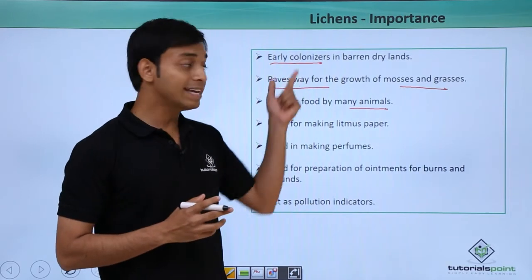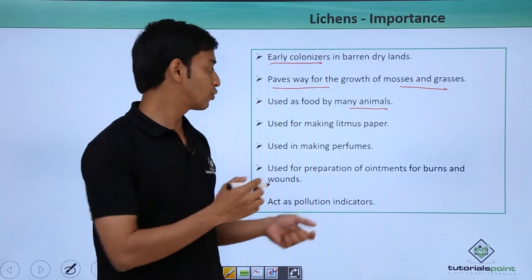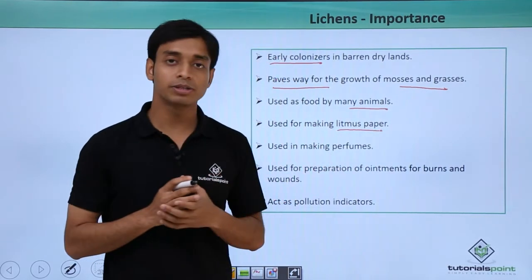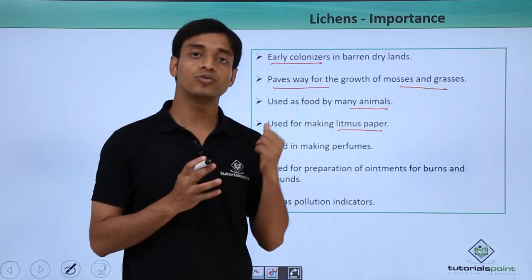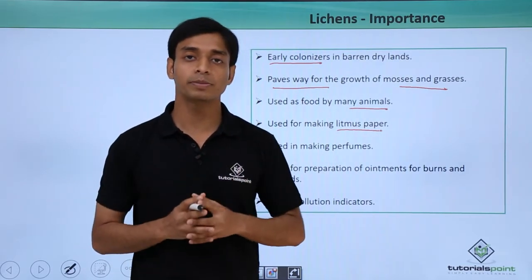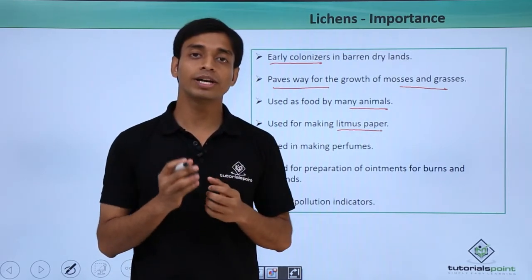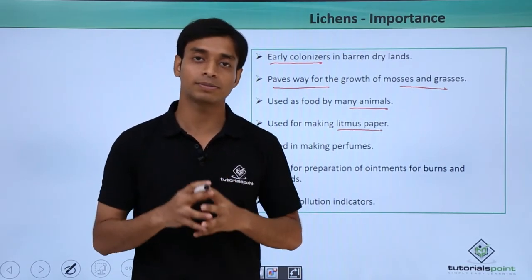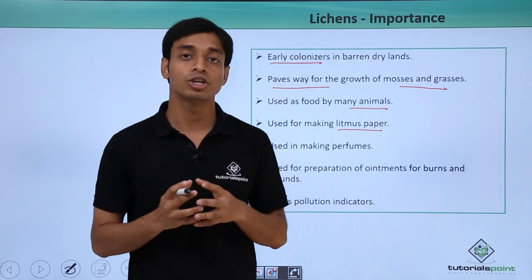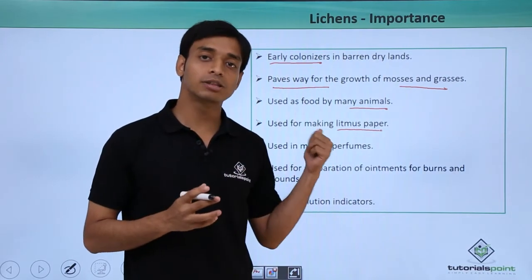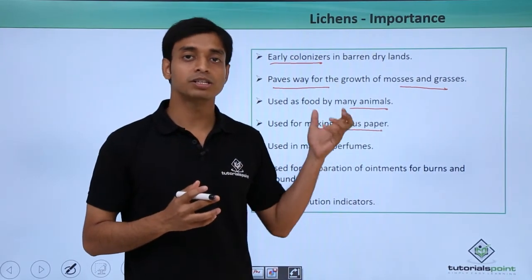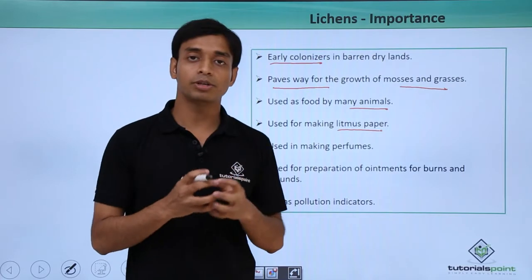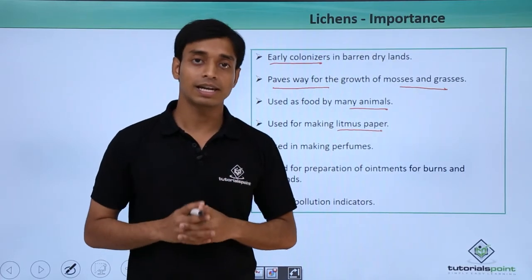These lichens are used for making litmus paper. We use litmus paper in order to indicate the pH of a particular substance. This litmus paper is made from certain components of the lichens.